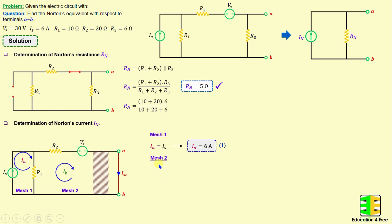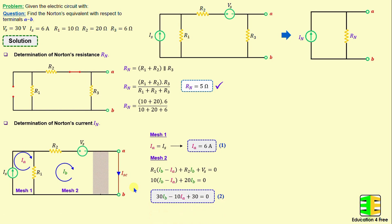By applying Kirchhoff's voltage law in mesh two, we can write: R1 × (IB − IA) + R2 × IB + Vs = 0. Replacing the resistors and voltage with their numerical values and simplifying this equation, we obtain: 30 × IB − 10 × IA + 30 = 0.